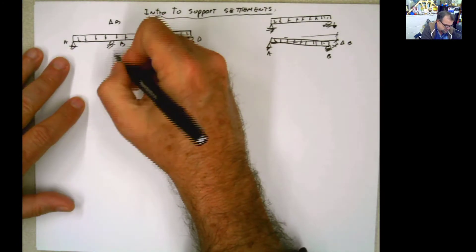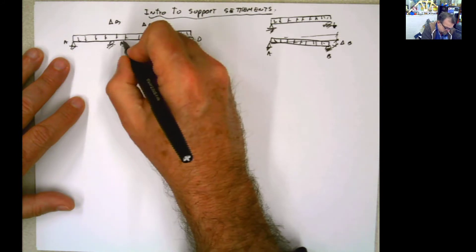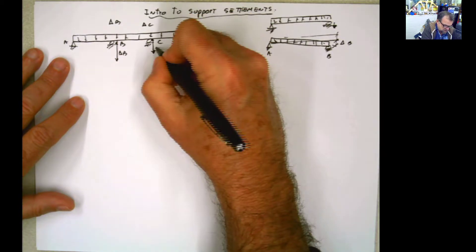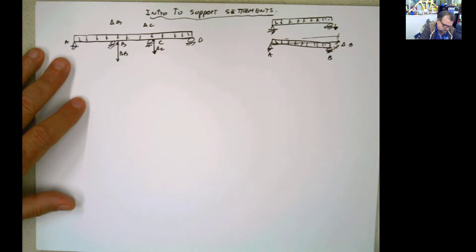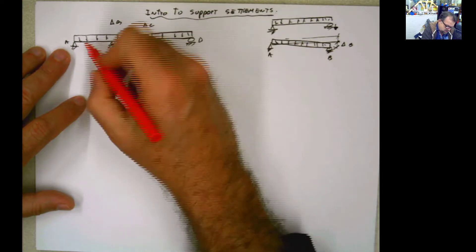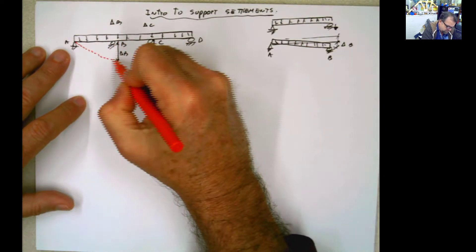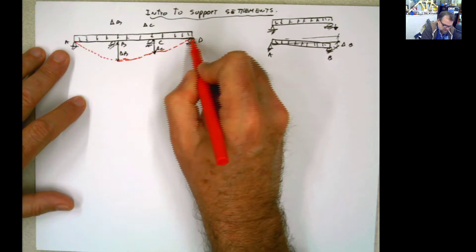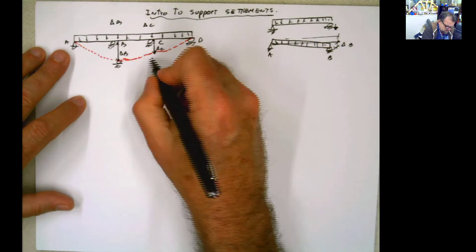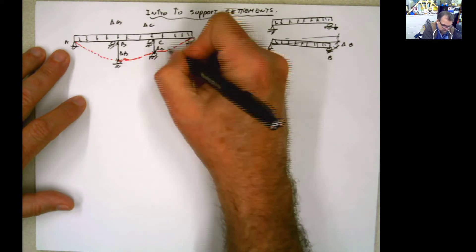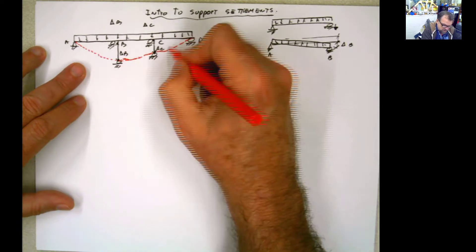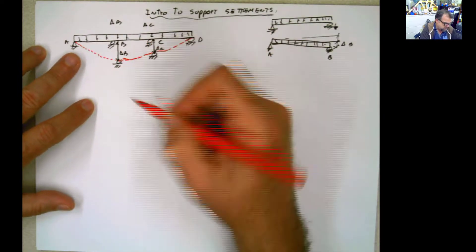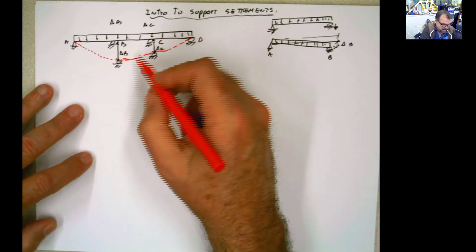What happens here is if B settles by some amount delta B, and C also settles a different or same amount delta C, while the exterior supports are not settling — the whole structure is going to be subject to additional deformations and additional stresses due to that caving of the supports. This type of behavior is also going to introduce additional moment, moment redistribution, and internal stresses to that type of structure.